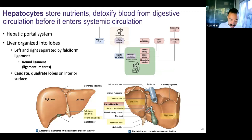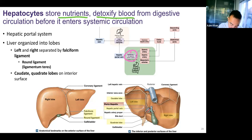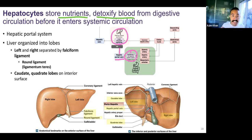Hepatocytes not only produce bile, they have many other functions, including storing nutrients and helping detoxify blood from anything toxic that we might have eaten, like poisons or alcohol. It does this before it enters the rest of our systemic circulation. Whenever we absorb something from our intestines, it goes through our hepatic portal vein to the liver sinusoid capillaries, where the hepatocytes can take in what we've eaten and screen it, then release it to the rest of the systemic circulation.